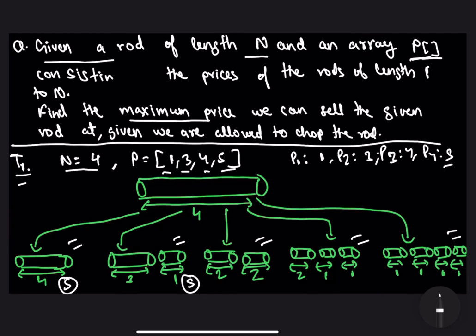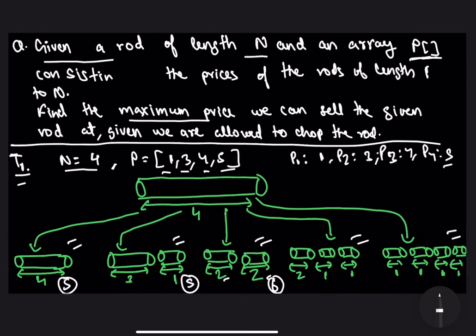The third way is to chop the rod of length 4 into two rods of length 2 each, so the price will be 2 × P[2] = 6. The fourth way is to chop the rod into a single rod of length 2 and 2 rods of length 1, so the price will be P[2] + P[1] + P[1] = 5.